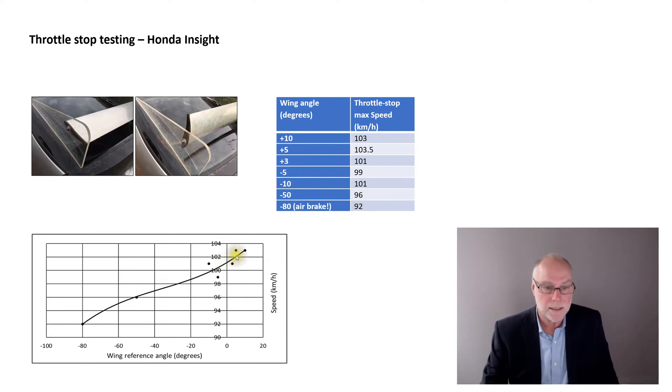Now, you can see here's a graph with wing reference angle along the bottom axis and speed up the vertical axis. And you can see at all these angles around here, plus 10, plus 5, plus 3, there's not much difference. There's a bit of scatter in the data. But you can see that as the wing gets steeper beyond that, there's very clearly an increase in drag, a decrease in top speed. So again, it makes sense.